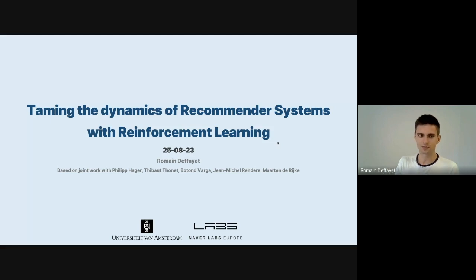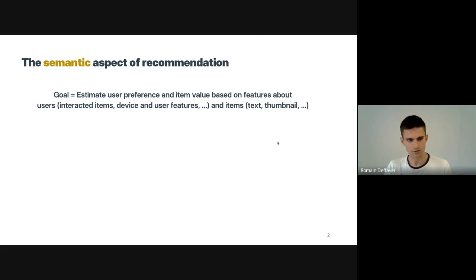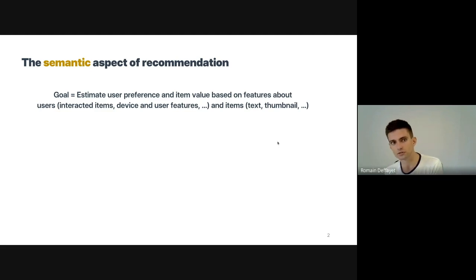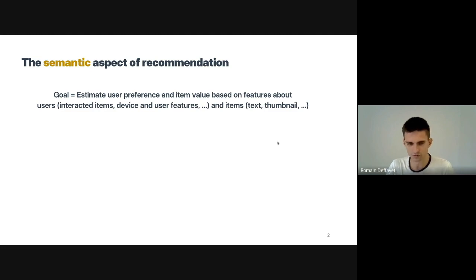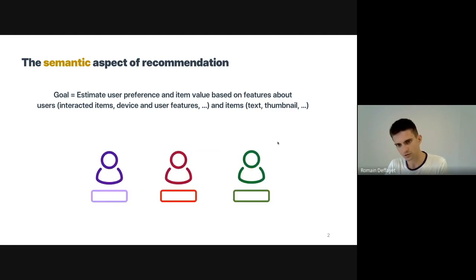I want to start by restricting the scope a little bit and divide the recommendation task into two subtasks. First, there is a semantic aspect where you try to understand users and items and relate them. You have features like history, who users are, how they access the platform, and items with content, text, video, and so on. This is sort of an extension of an NLP or computer vision task — you have to learn user and item characteristics from features in order to match them.